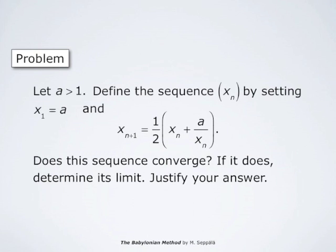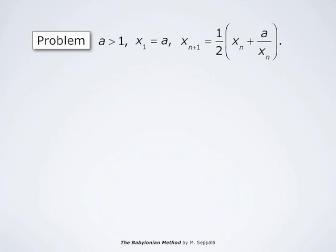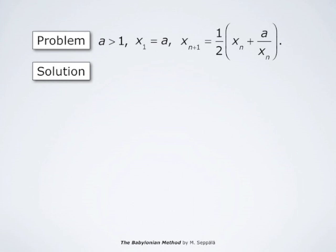An important consequence of the completeness of the real numbers is that a bounded monotonic sequence always has a finite limit. We will use this result just in a moment. We fix a number a larger than 1 and define the sequence x_n by setting x_1 = a and x_{n+1} = ½(x_n + a/x_n). The question is: does this sequence converge? If it does, determine its limit, and we have to justify our answer.